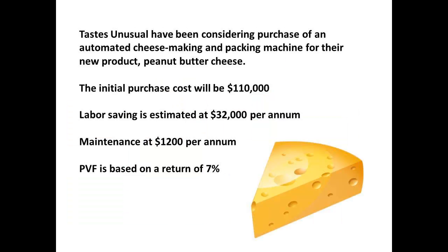Let us work through an example to show this. Tastes Unusual are deciding whether to invest in an automated cheesemaking and packaging machine that will produce crunchy peanut butter cheese. They have an initial purchase price of $110,000 and the estimates are that the machine will save $32,000 each year and maintenance costs will be $1,200 each year. The present value factor is based on a required rate of 7%.